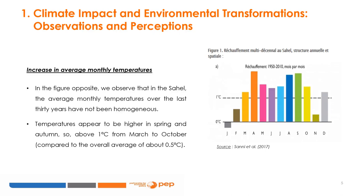As can be seen in this figure, in the Sahel, the average monthly temperatures have not been homogeneous over the last 30 years. Temperatures appear to be higher in the spring and autumn, above 1 degree Celsius from March to October, compared to the overall average of about 0.5 degrees Celsius.